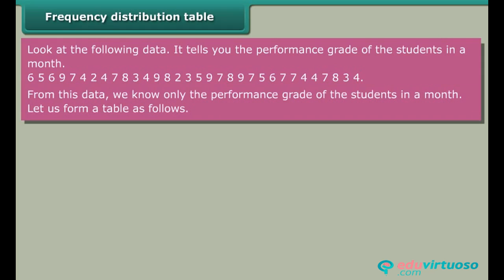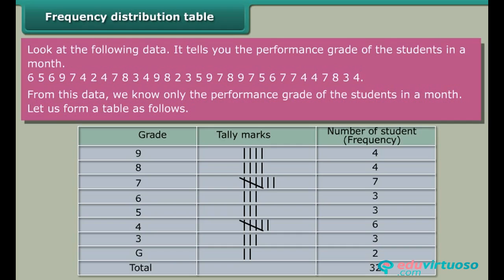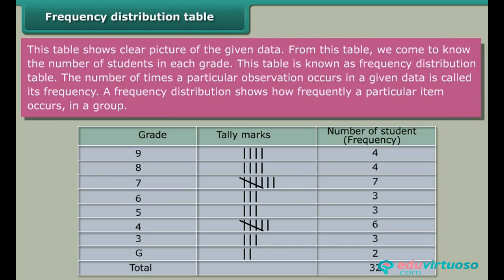From this data, we know only the performance grade of the students in a month. Let us form a table. This table shows a clear picture of the given data. From this table we come to know the number of students in each grade. This table is known as a frequency distribution table. The number of times a particular observation occurs in a given data is called its frequency. A frequency distribution shows how frequently a particular item occurs in a group.